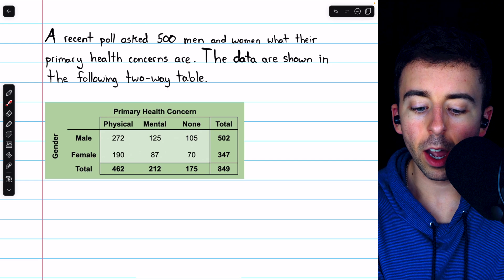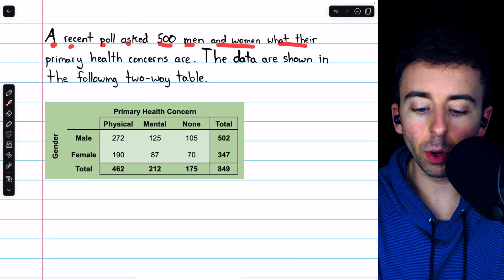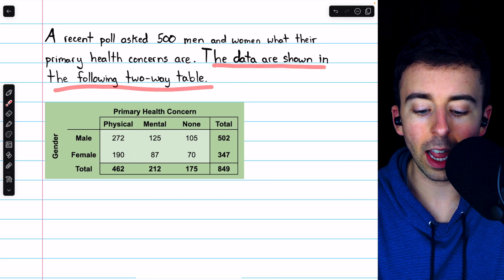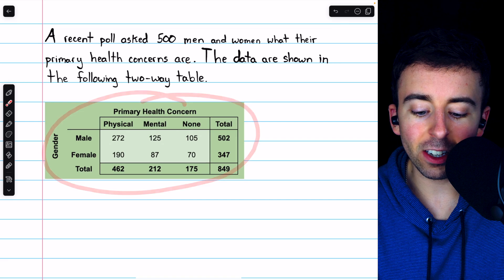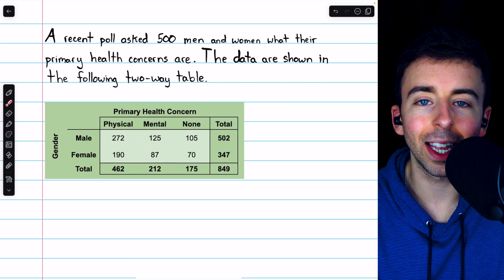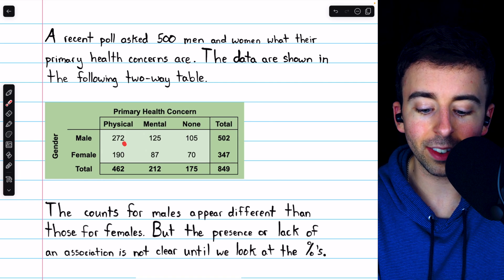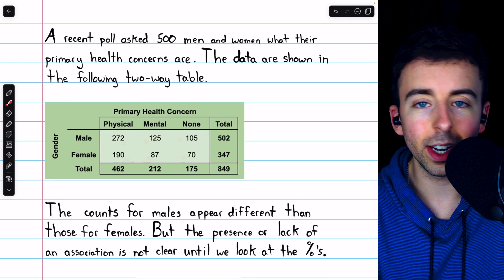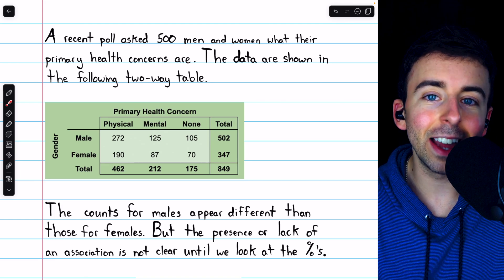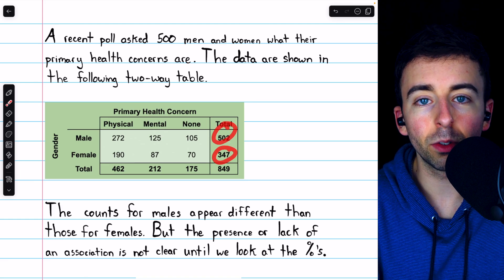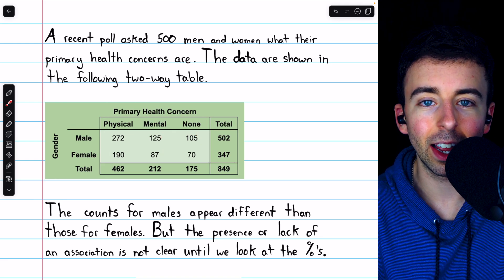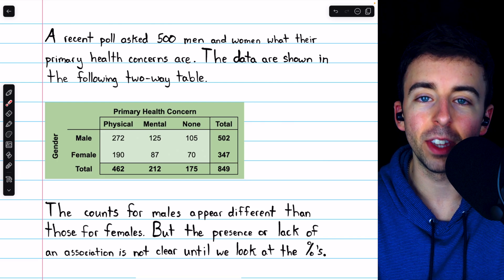Let's quickly run through one more example. A recent poll asked 500 men and women what their primary health concerns are. The data are shown in the following two-way table. So here we see our two-way table and it just has counts. So we're going to have to make sure to calculate percents before we start trying to make any conclusions. If we just looked at the counts, we might say, hey look, the counts for males and females look quite different. So gender and primary health concern must be associated. You can't do that though. A different number of males and females were polled. So of course the numbers here look different. It's the percents that are relevant and will give us an accurate interpretation of the evidence.